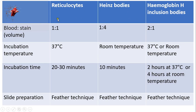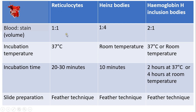For reticulocyte staining, the blood to stain ratio is 1 to 1 — that means when we add 1 volume of blood, we add 1 volume of stain. For the staining of Heinz bodies, we add 1 volume of blood to 4 volumes of stain.